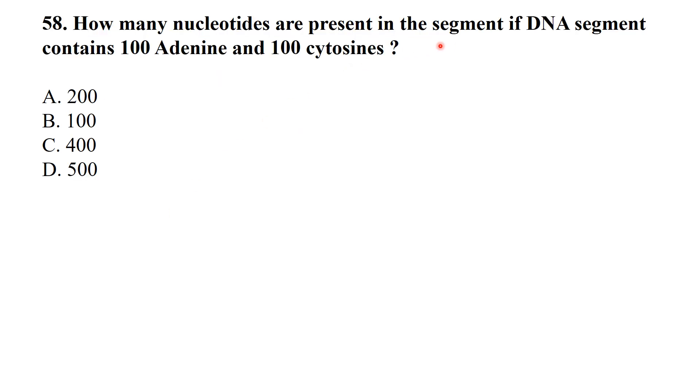Question 58: How many nucleotides are present in a segment of DNA if DNA segment contains 100 adenine and 100 cytosine? If there are 100 adenines then there will be 100 thymines, and if there are 100 cytosines then there will be 100 guanines. 100 plus 100 equals 200, 200 plus 200 equals 400. The best answer is 400. Sometimes if cytosine is 20%, and adenine is given, then we add 20 plus 20, subtract from 100, and divide.